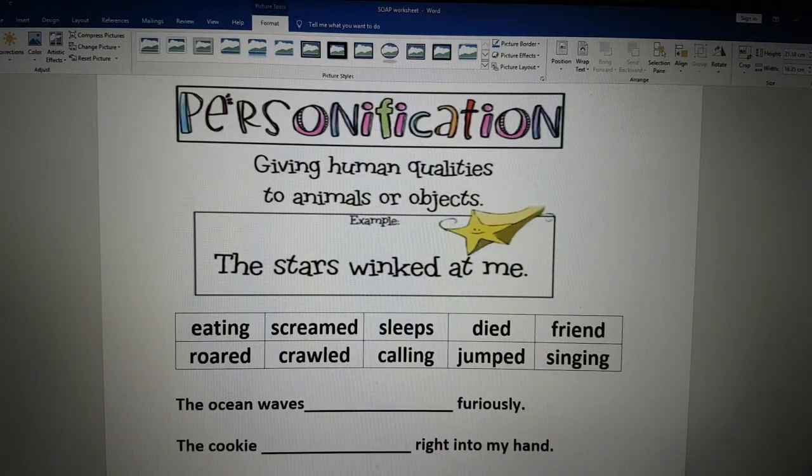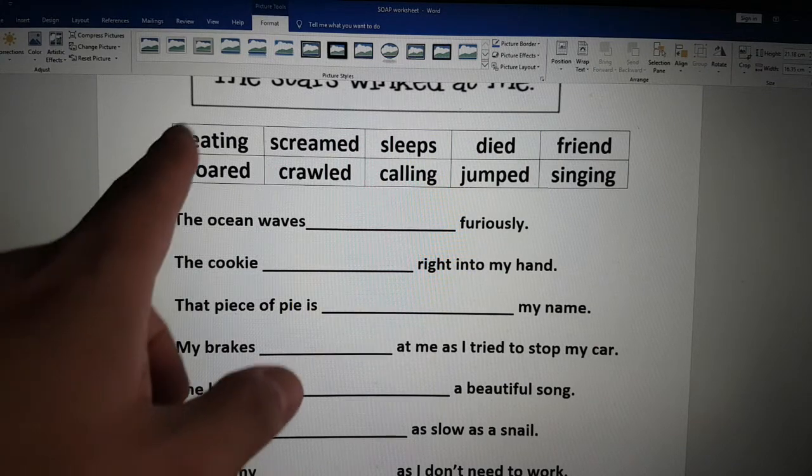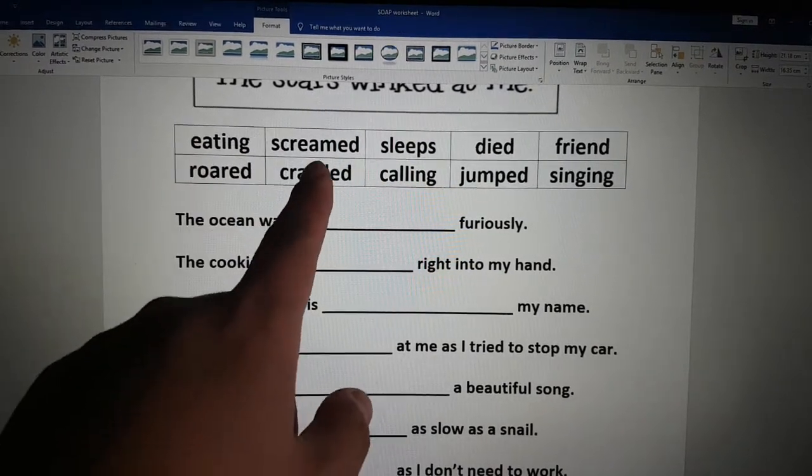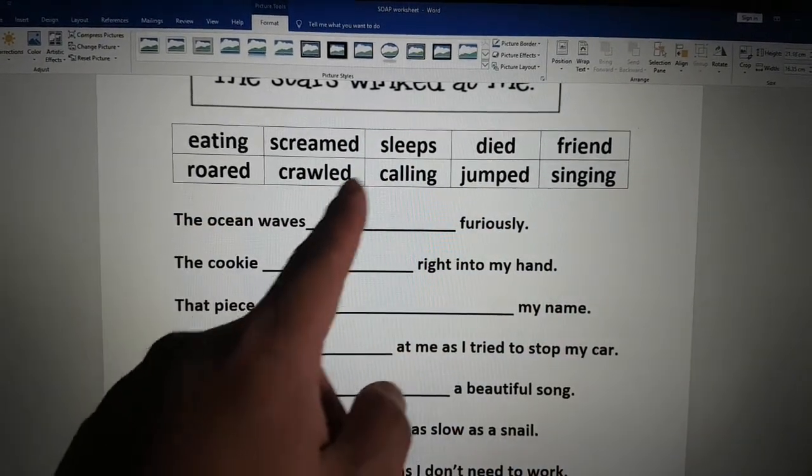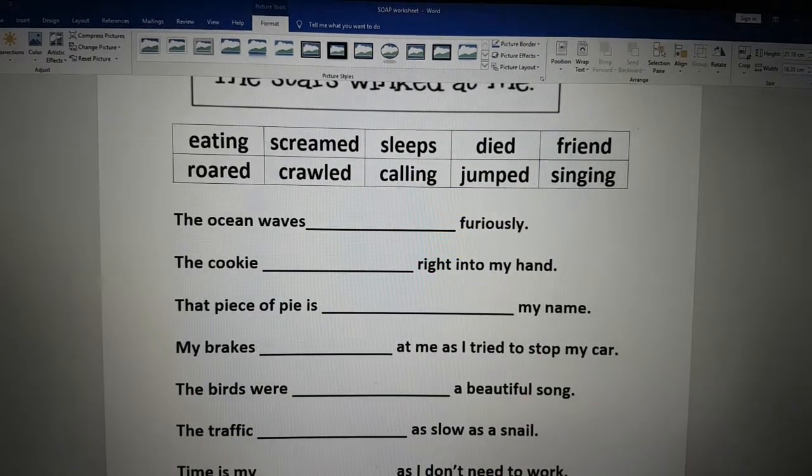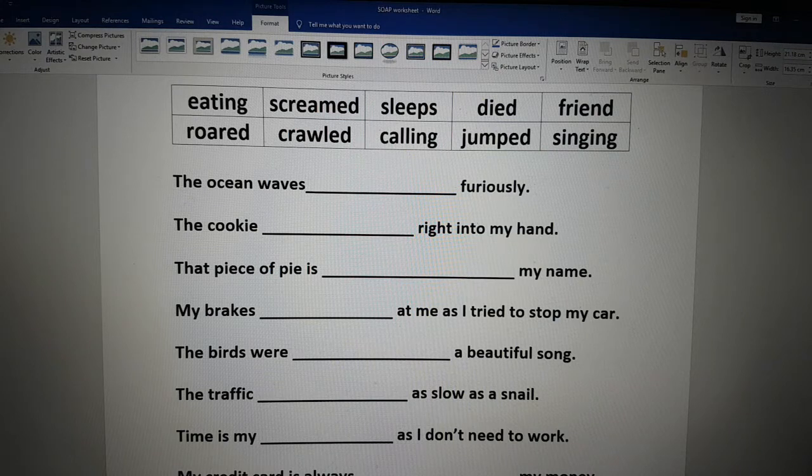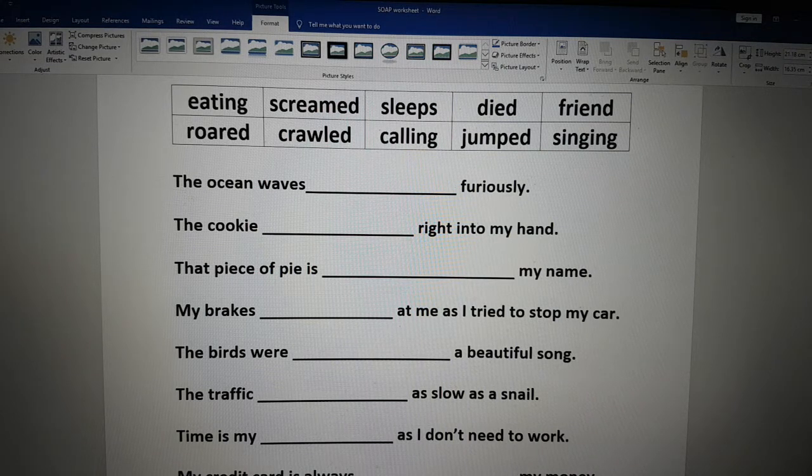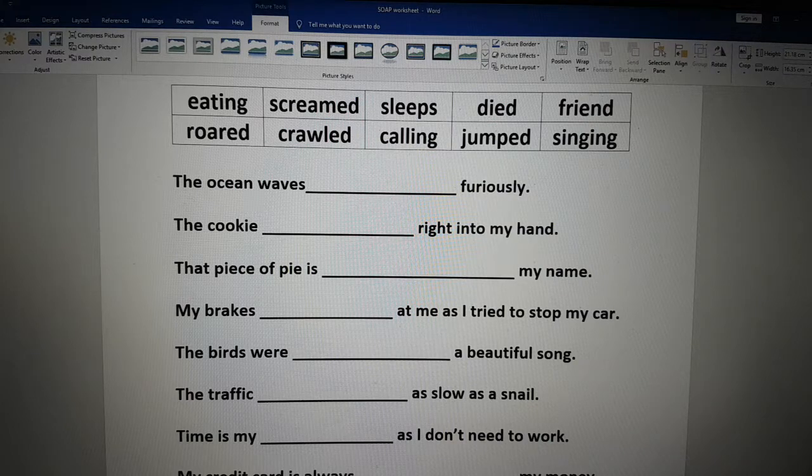And the last one, personification. When you make something as a person. So these words, read them out: eating, screamed, sleeps, died, friend, roared, crawled, calling, jumped, and singing. Why don't you take a moment to read through it and we'll explain the vocabulary as we go through each one. So pause now, match the words.